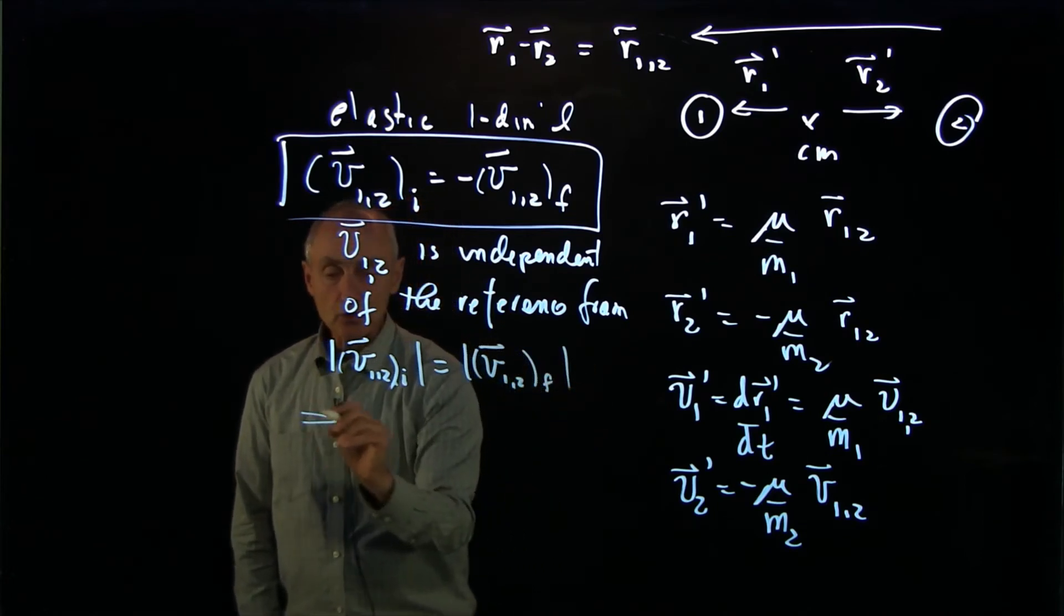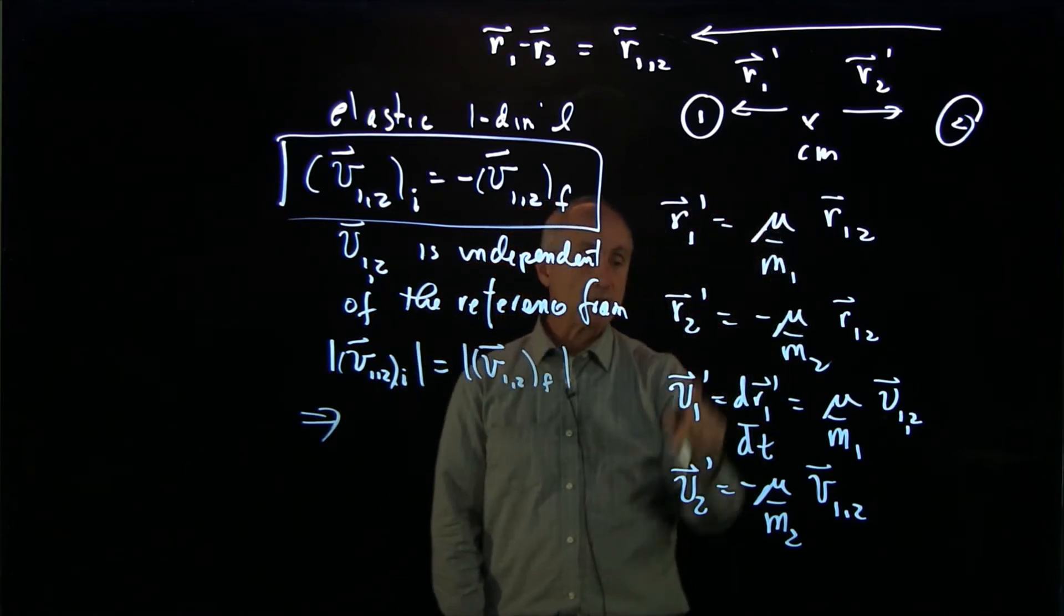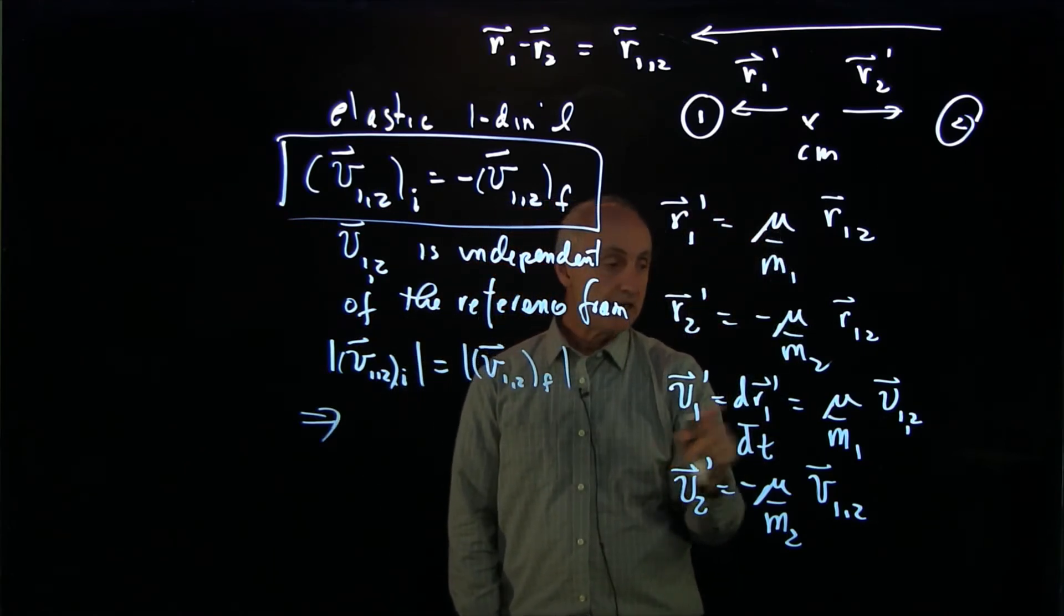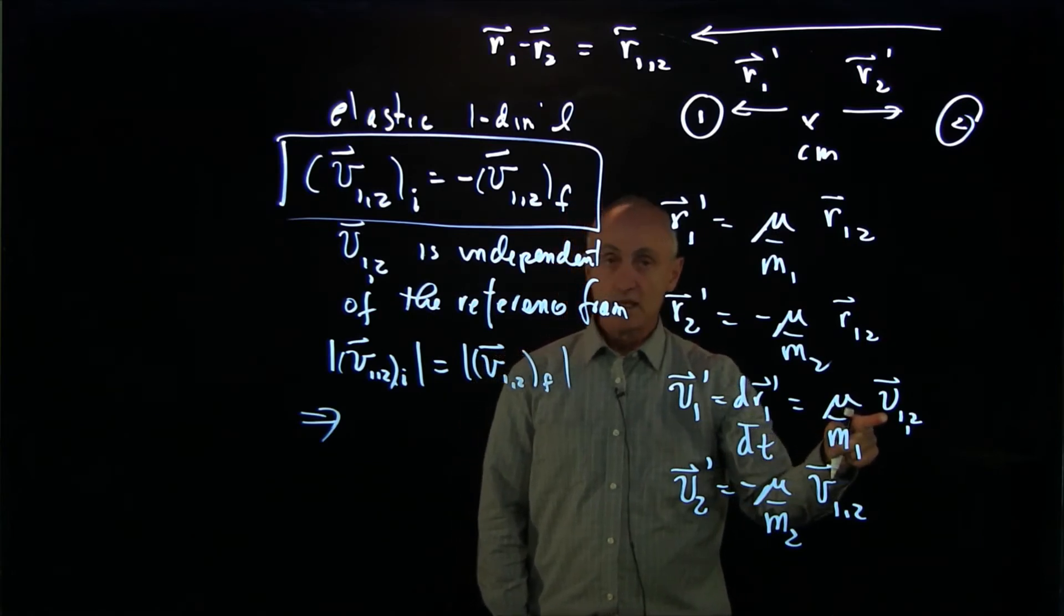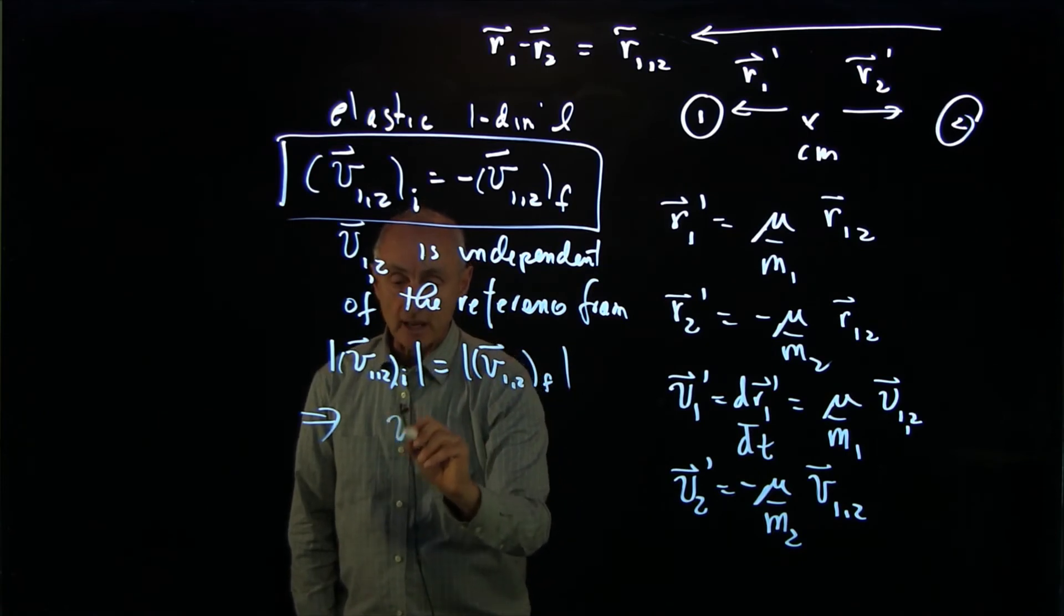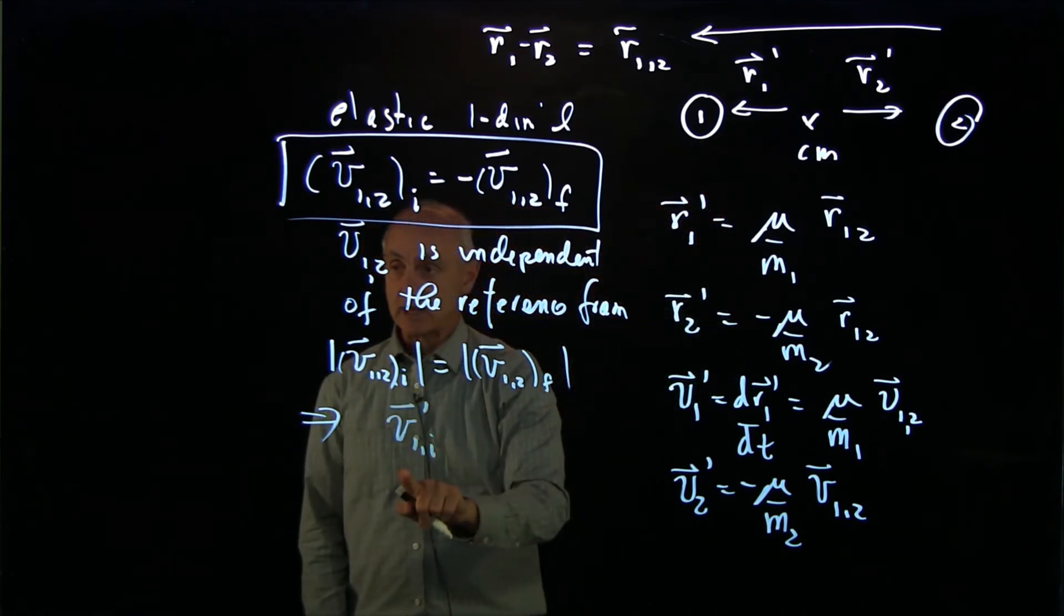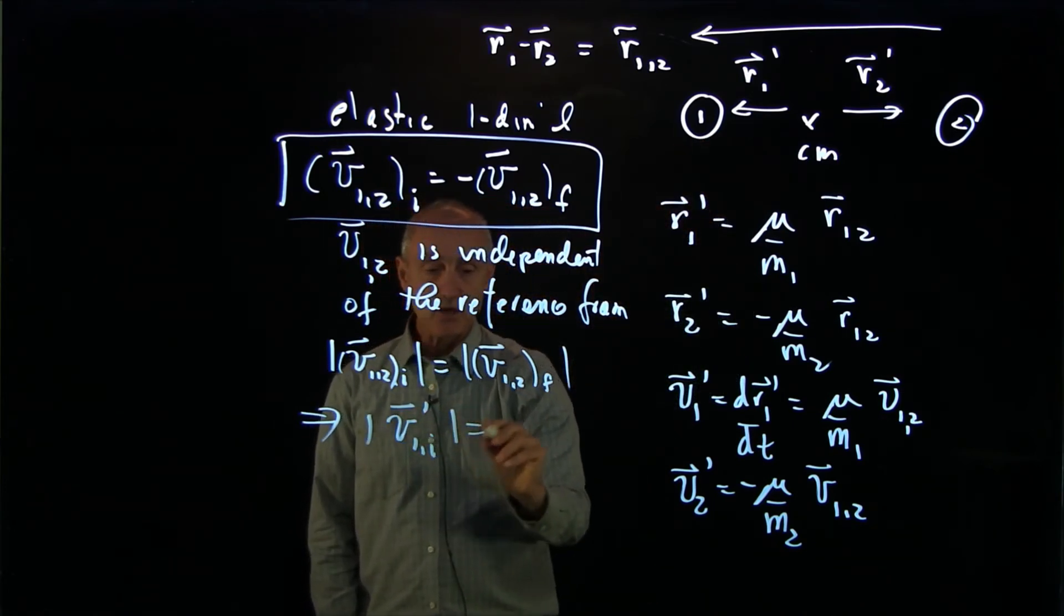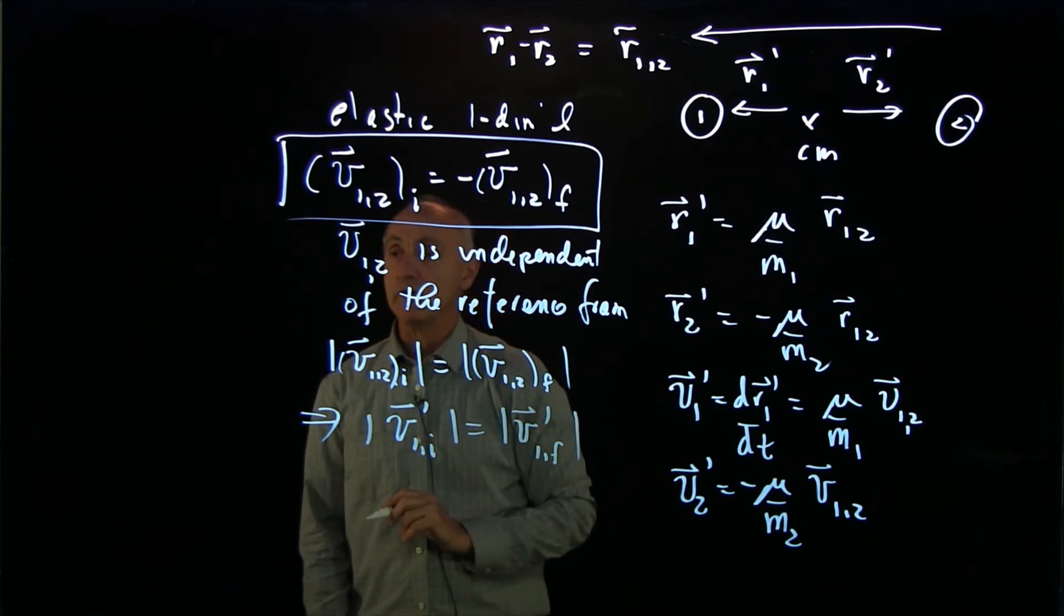And the conclusion is because in the center of mass frame, v1 prime is proportional to the relative velocity. That tells us that in the center of mass reference frame, that the initial velocity of object 1 in the center of mass frame is equal to the final velocity of object 1.